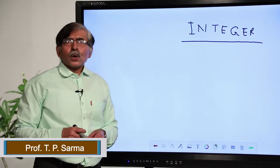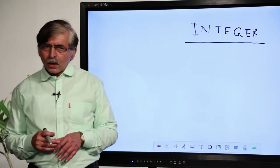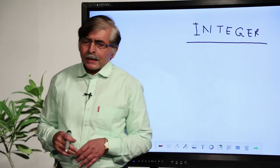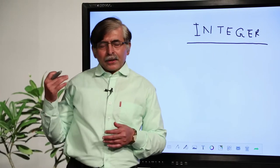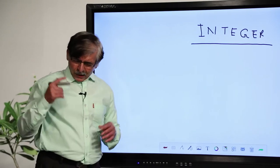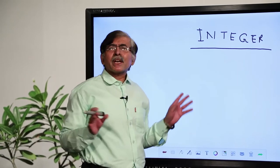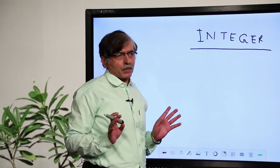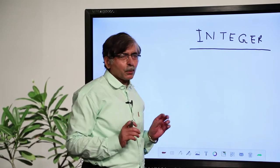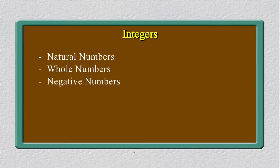In class 6 we have studied numbers — whole numbers and negative numbers. Integers means it is a bigger collection of numbers where we have natural numbers, whole numbers, and negative numbers.